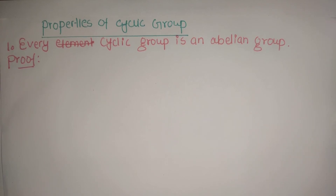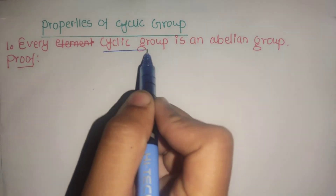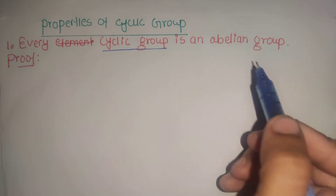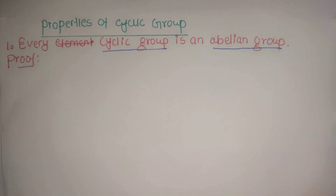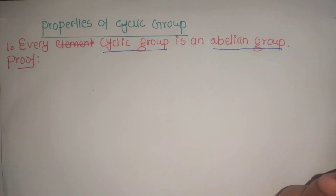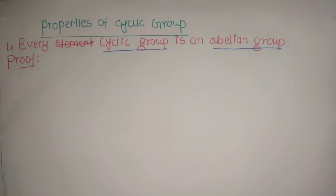We will just verify these properties. So our first property is: every cyclic group is an abelian group. We already know the meaning of cyclic group, and what an abelian group is — we also know that. So based on cyclic group, what do we need to show?